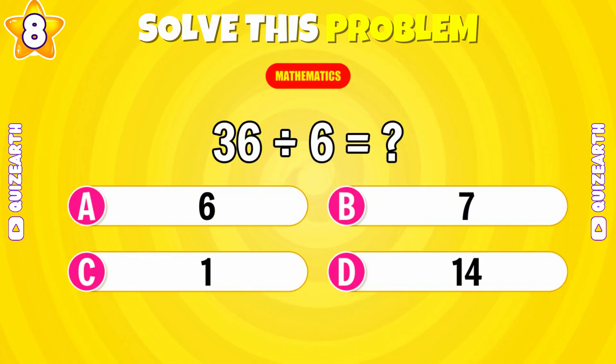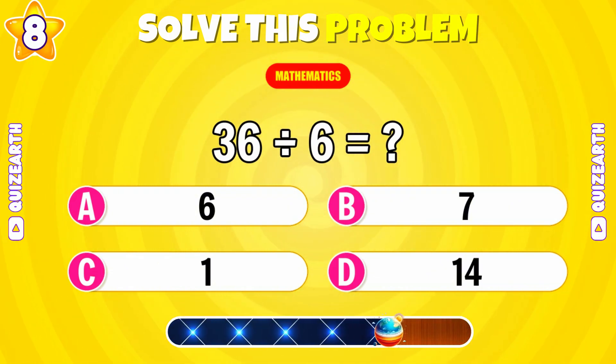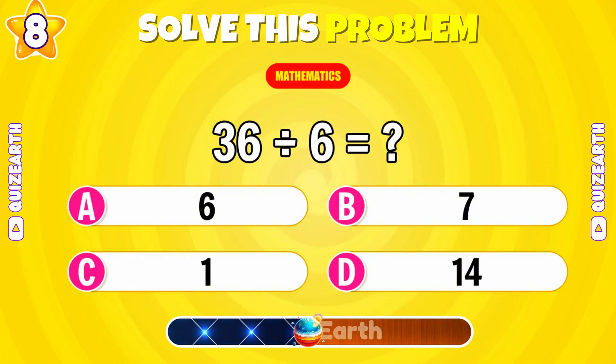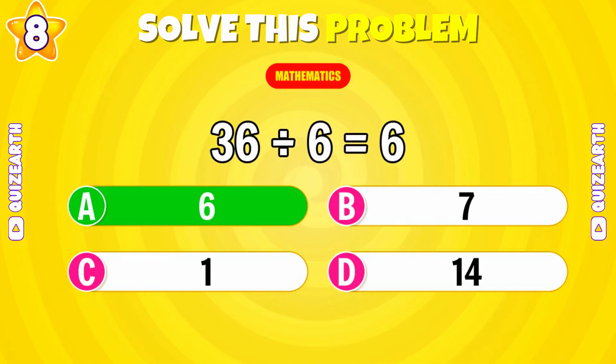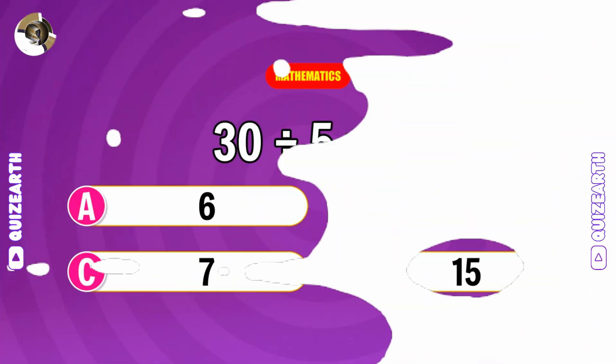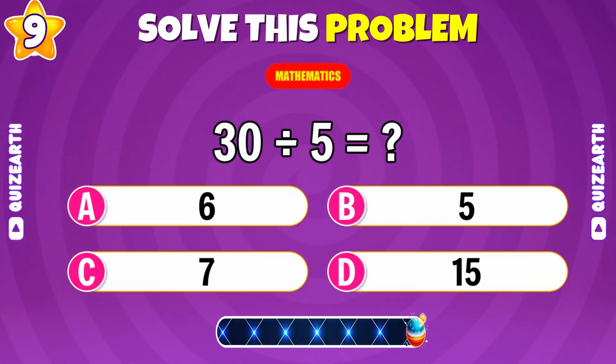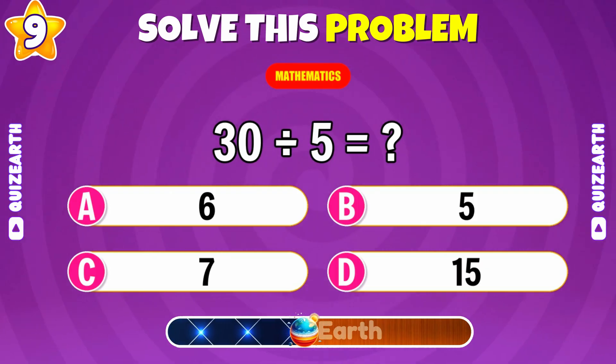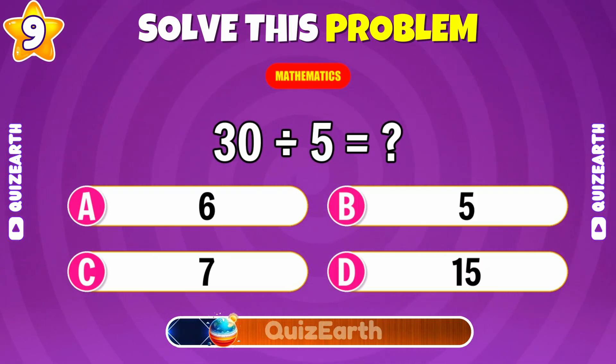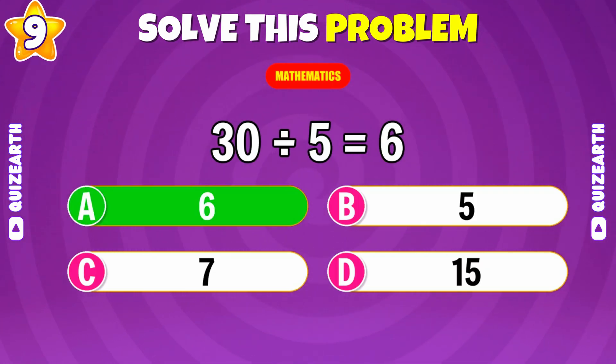Let's see. Thirty-six divided by six? Brilliant. Six. Now. Thirty divided by five? Fantastic. The answer is six.